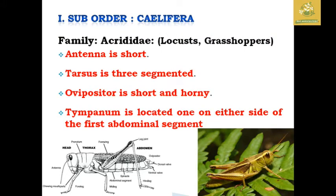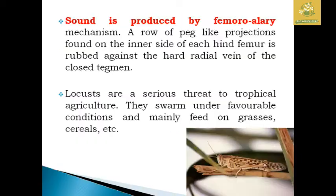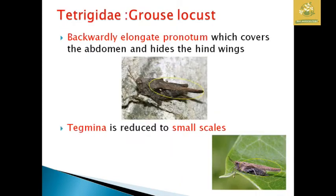The family Acrididae comprises locusts and grasshoppers. The antennae are short, the tarsus is three-segmented, and the ovipositor is short and horny. The tympanum is located on either side of the first abdominal segment. Sound is produced by the femoro-alary mechanism. Locusts are a serious threat to tropical agriculture because they swarm under favorable conditions and feed on every crop grown in the area, including grasses.